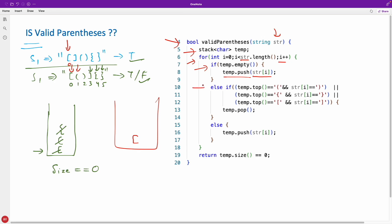Now see, this is a very important point here. If stack's top is equal to this and my current pointer, what I am pointing at, is the closing one, so we have three different possibilities and we'll check for all of them. Is my temp's top equal to this? And if that is true then am I pointing at this?